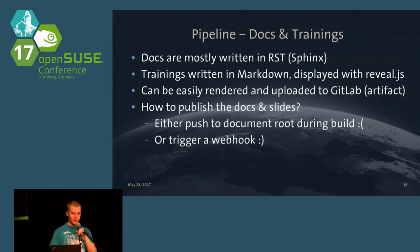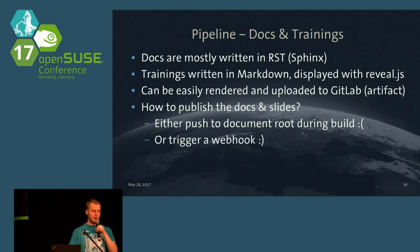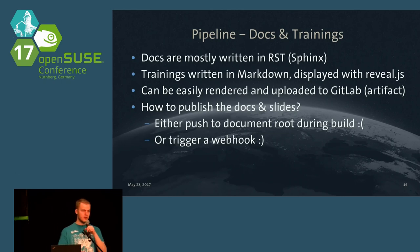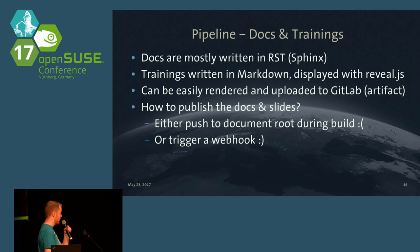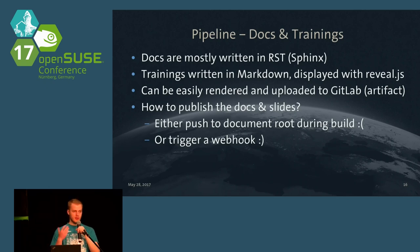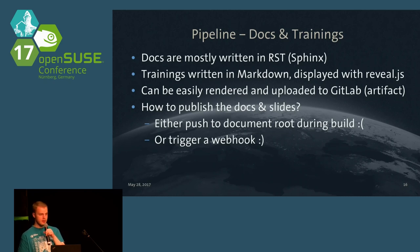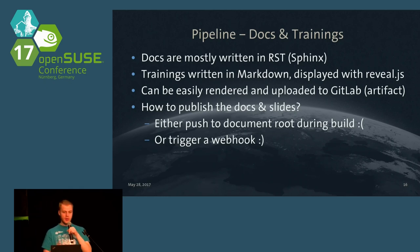Most documentation from the developers is written in RST and we render it to HTML or PDF with Sphinx. Training slides are written in Markdown and displayed with Reveal.js, giving us those fancy slides viewable in a browser. These can be quite easily rendered with GitLab CI — just execute the required commands and you will have them available as artifacts. But how do you then publish those slides or documentations? You can either push them directly during the build process to your web server or you can trigger a webhook, which in my opinion is the cooler way.